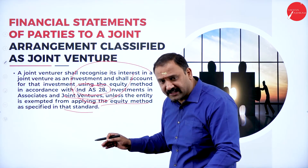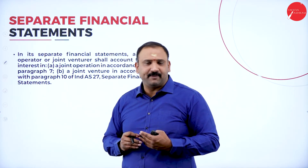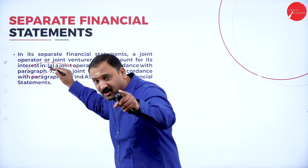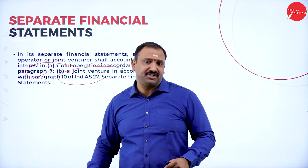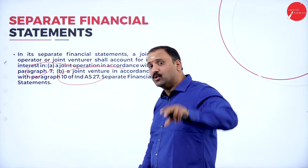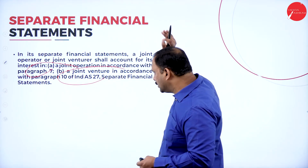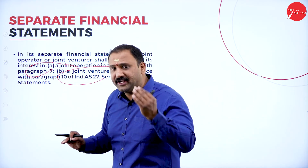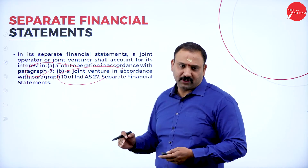In this case we apply IAS 28, and entities get exempted from Indian Accounting Standard 111. Regarding separate financial statements, a joint operator or joint venture shall account for its interest as given in paragraph 7 of this accounting standard, and a joint venture in accordance with paragraph 10 of Accounting Standard 27, which covers separate financial statements. A complete statement will be provided showing how things are moving, what factors apply, and all joint-related operations involved.